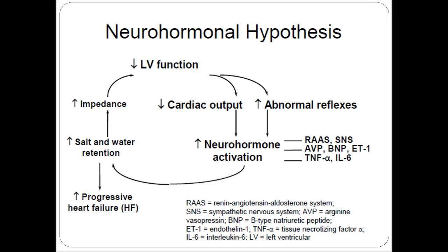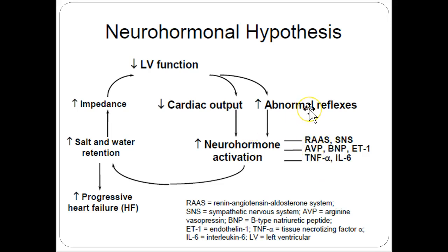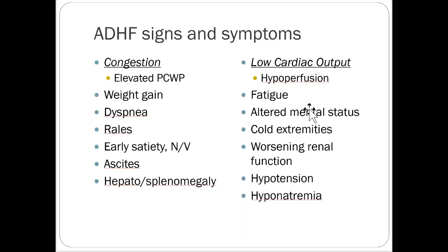We talked about this a little bit already with the neurohormonal hypothesis — saltwater retention, cardiac output, and the RAS system getting over-ramped. We talked about the sympathetic nervous system, brain natriuretic peptide, and tumor necrosis factor alpha. Nothing really too significant from a pharmacologic aspect here, just a quick review.